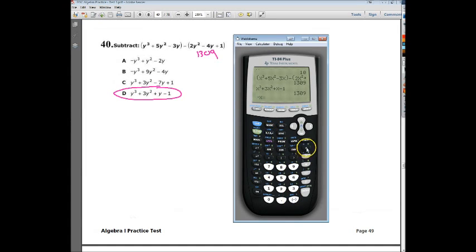I'll show you one of the other ones to show you that it doesn't work. So negative x to the third power plus x squared minus 2x. You type all that in, which would be this one right here, a. You hit enter. It's not 1309. So you know it's not the right answer.